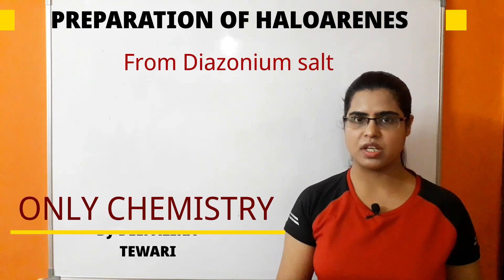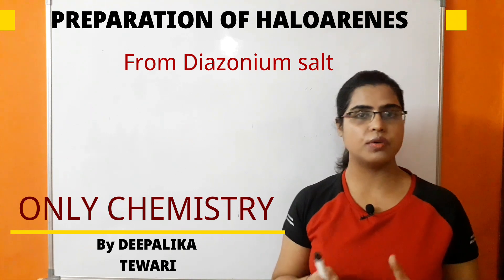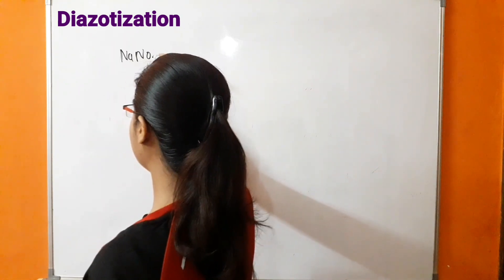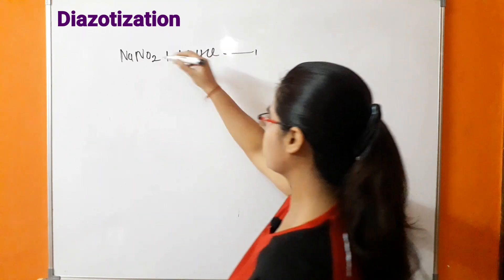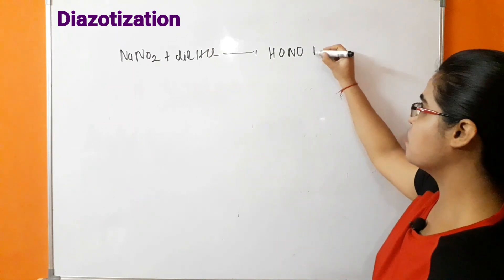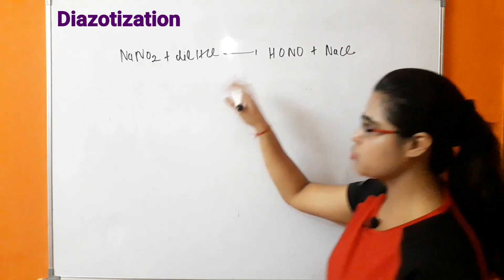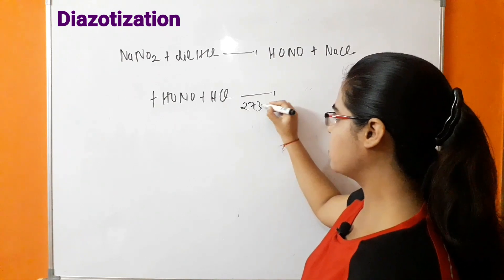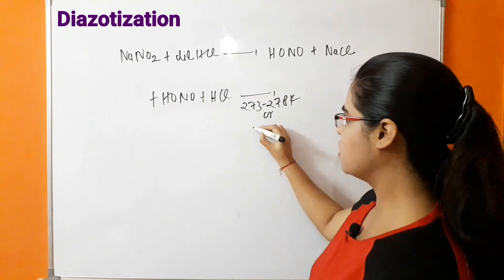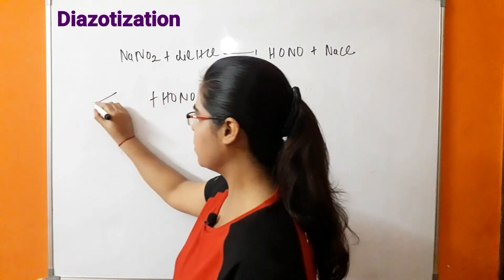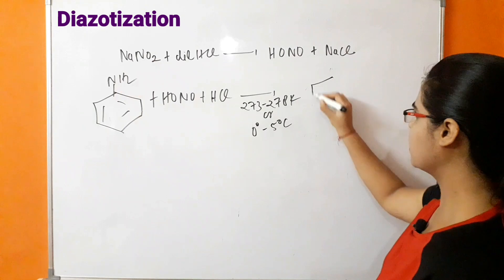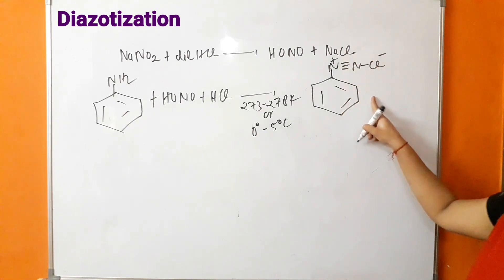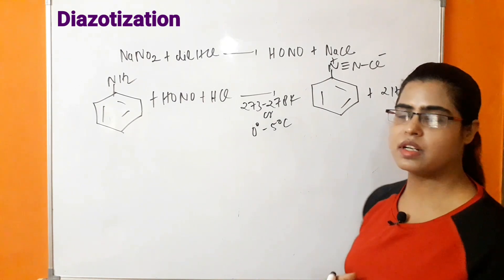The next preparation method of haloarenes is from diazonium salt. The question arises: what is a diazonium salt and how is it prepared? It is prepared by a method known as diazotization. Sodium nitrite (NaNO2) is dissolved in dilute HCl, forming nitrous acid (HONO) and removal of NaCl. This HONO then reacts with aniline in the presence of HCl at a temperature of 273 to 278 Kelvin (0°C to 5°C) to form the diazonium salt, with removal of 2H2O.